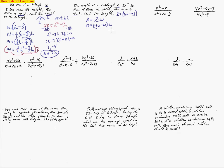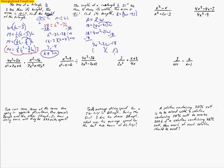Multiplying each of the terms, we get 18 equals 4w squared minus 21w. We go ahead and move the 18 to the other side, giving us 4w squared minus 21w minus 18 equals zero. Now we proceed to factor.